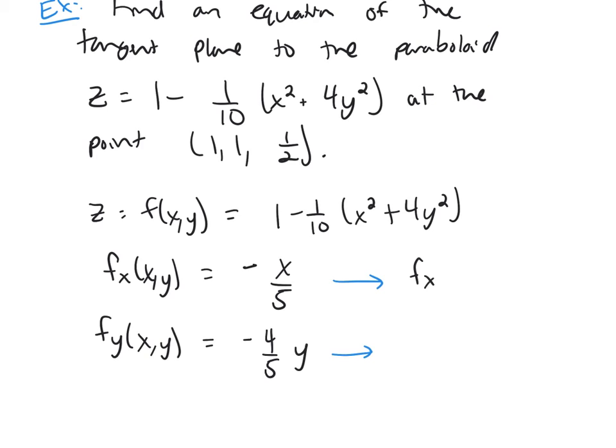And then I'm going to take my partial derivatives and plug in my point. All I need is my x and my y coordinates, so I get negative 1/5 and negative 4/5.